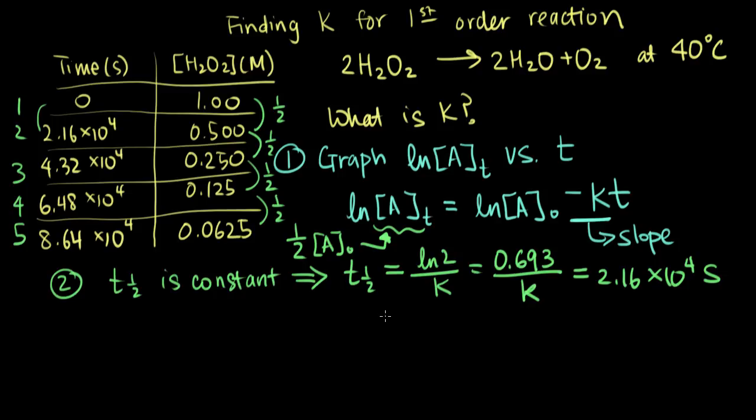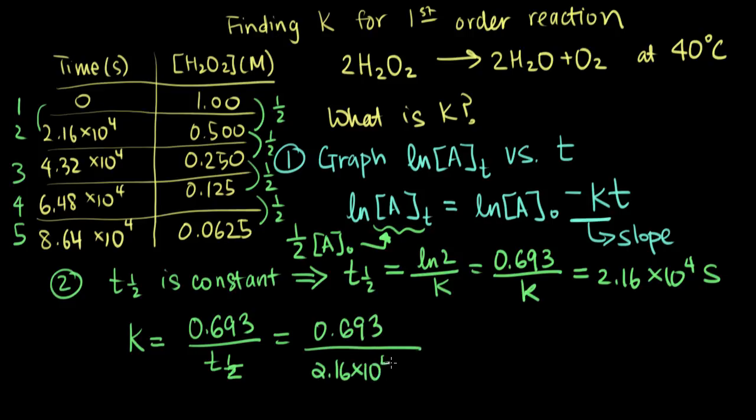But anyways, now that we know the half-life from looking at our data table, we can actually rearrange this equation here to solve for K. So if we solve for K, K is equal to 0.693 divided by our half-life. And now that we know our half-life, we can plug that in and get K. So it's 0.693 divided by 2.16 times 10 to the 4 seconds.